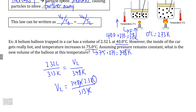Putting this into the calculator, V2 comes to 2.58 liters. This is what we'd expect: because as we increase temperature, our volume is also going to increase compared to the original volume, which is exactly what we have seen.